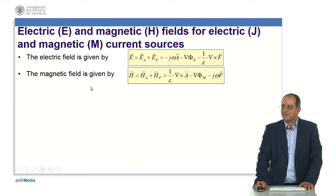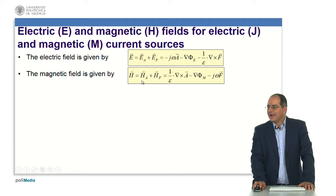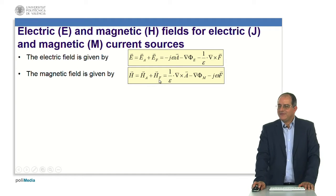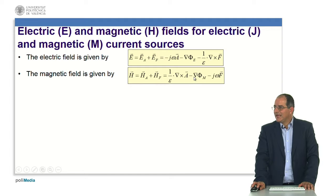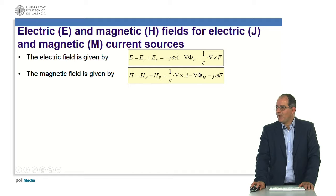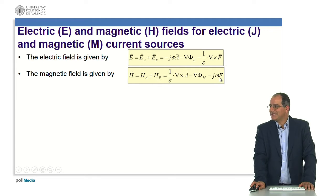The same applies to the corresponding magnetic field, which is given by the sum of the magnetic field from the magnetic vector potential A and the magnetic field from the fictitious electric vector potential F. Expanding this equation, it results in 1 over epsilon times the curl of the magnetic vector potential A, minus the gradient of the magnetic scalar function. In the problem we are tackling, the fictitious term does not exist, and likewise minus j omega times the corresponding electric vector potential term is also absent.